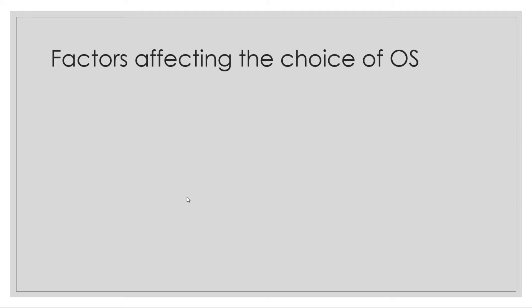The factors affecting a choice of operating system — one of the main factors is the type you need: multi-user, single-user, or real-time. It depends on what your company or business needs. Someone at home is not going to need a real-time operating system, whereas a manufacturing company that needs safety systems in place might need one. So the type of system depends on the need for it.